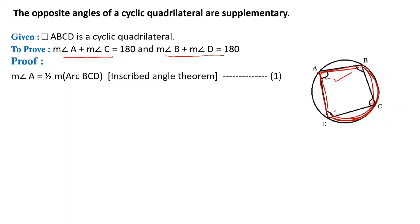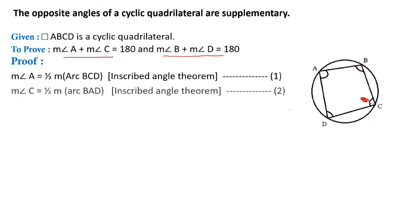Angle C is opposite to angle A. Angle BCD is also an inscribed angle and arc BAD is the intercepted arc. Therefore, the measure of angle BCD equals half of the measure of arc BAD. This is equation two.